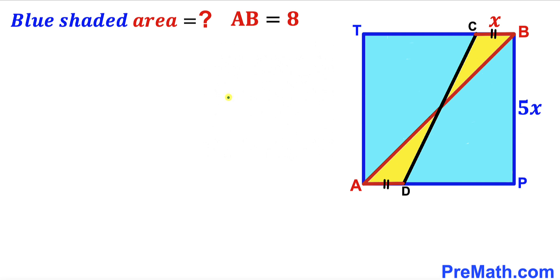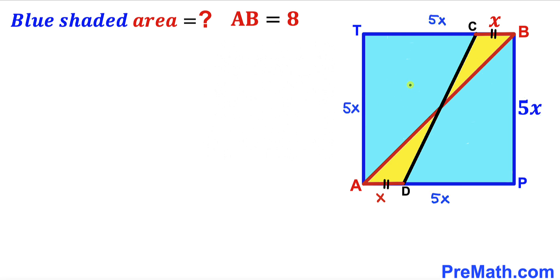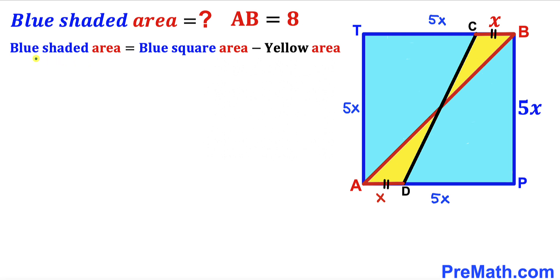Let's get started. We observe that segment BC equals segment AD. If BC is X, then AD is X as well. Since all side lengths of square APBT are equal and the side length is 5X, all four sides are 5X. The blue shaded region area equals the area of square APBT minus the area of the yellow shaded region.